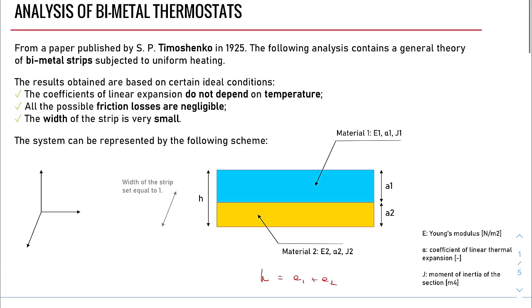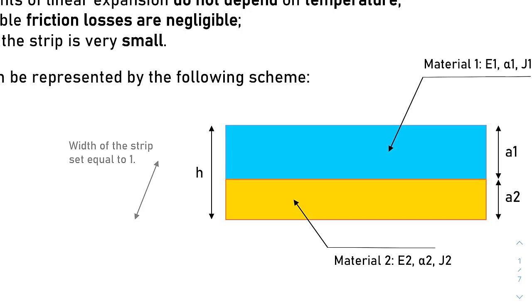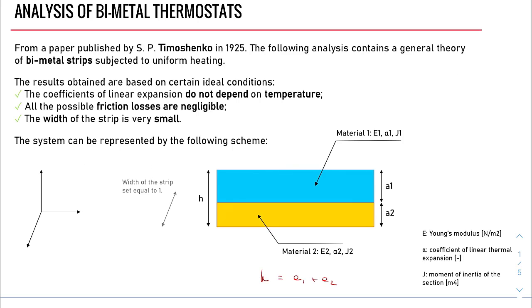The last point that it's worthy to highlight is that this is a plain problem. It can be demonstrated that the curvature of the bimetallic strip does not depend on its width. This is because the widths of the two layers are equal and they will simplify during the calculations. Therefore, we will set it equal to 1.